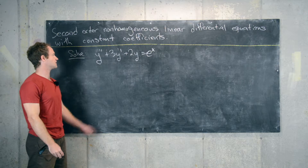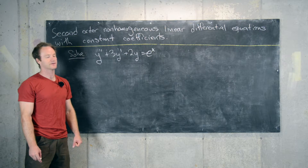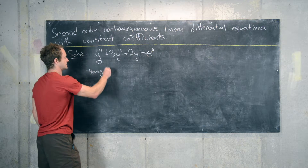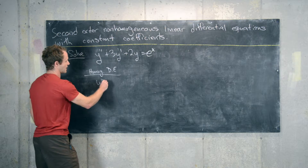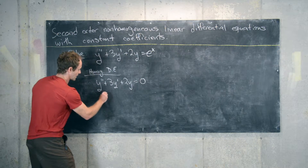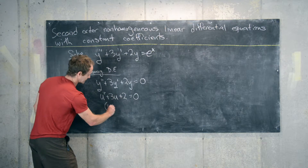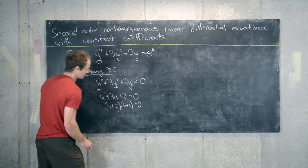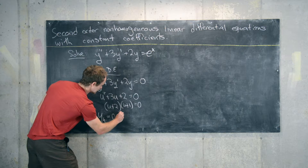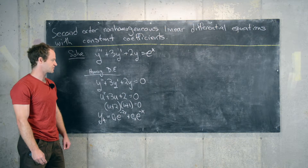The first example we'll look at is: y double prime plus 3y prime plus 2y equals e to the x. Previously we showed that the homogeneous differential equation and its solution play an important role, so we'll look at that first. The corresponding homogeneous differential equation is y double prime plus 3y prime plus 2y equals zero. Looking at roots of the characteristic polynomial u squared plus 3u plus 2 equals zero, we factor as u plus 2 times u plus 1 equals zero, giving roots negative 2 and negative 1. So the homogeneous solution is c1 e to the minus 2x plus c2 e to the minus x.